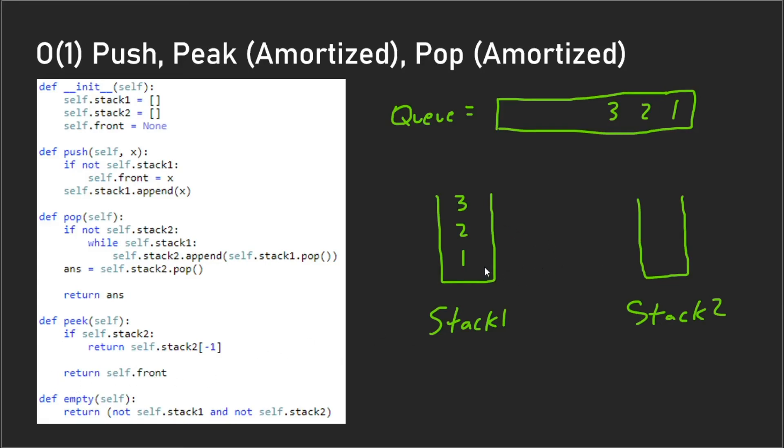And what self.front is pointing to is this right here. So how is it pointing to that? We have whenever we push an element and we see that there are no elements in stack one, we set that pointer, that front pointer, equal to that first element you push onto stack one. And after that you would just return that front value whenever you do a peek when stack two is empty.